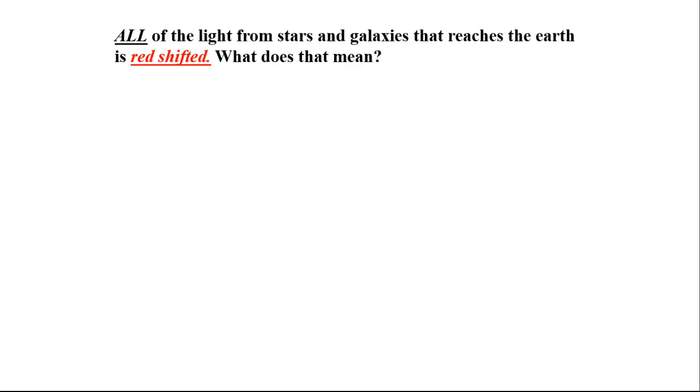All of the light from stars and galaxies that reaches the Earth is red shifted. What does that mean? It means that everything is moving away from us.